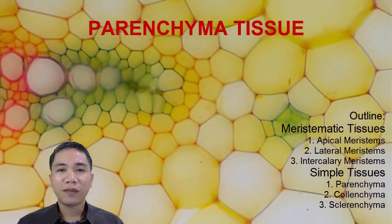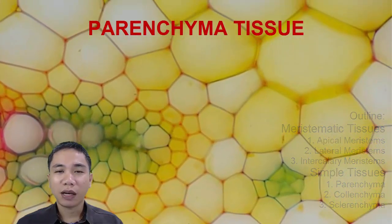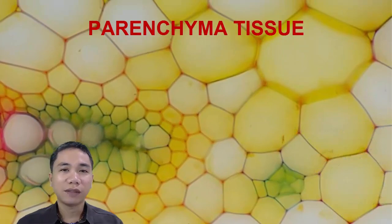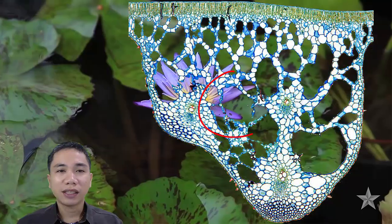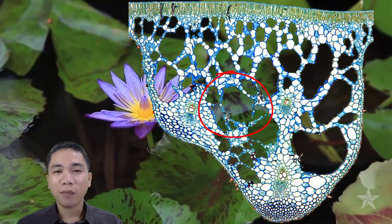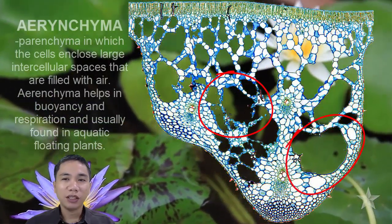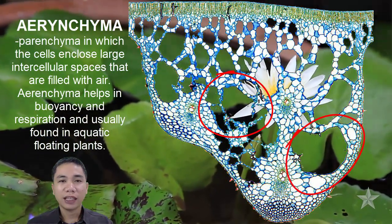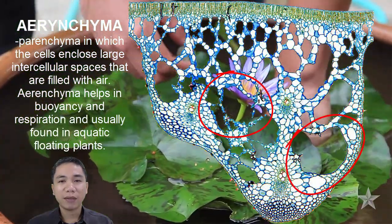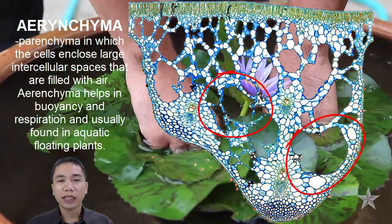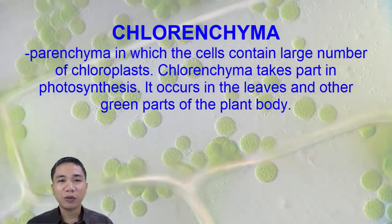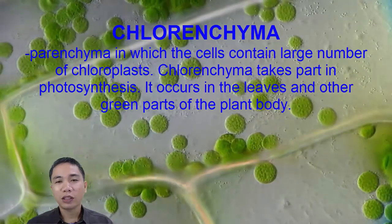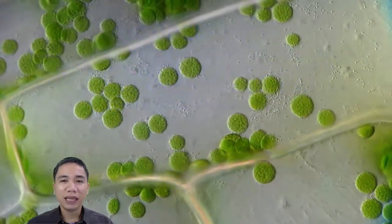Their functions are variable depending on the plant, and they can also have alternative names based on these functions. For example, in water lilies and other aquatic plants, the intracellular spaces are prominent. This type of parenchyma tissue with extensive connected air spaces is referred to as aerenchyma, which allows for buoyancy and efficient gas exchange. Parenchyma cells containing numerous chloroplasts are referred to as chlorenchyma tissue, which functions mainly in photosynthesis.